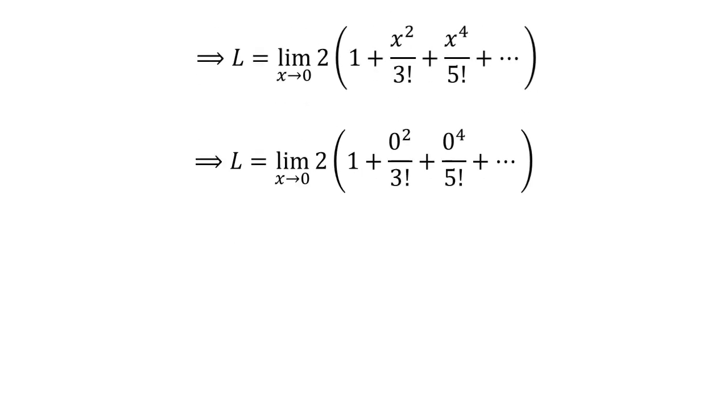As the limit is now a polynomial which is continuous at every point of real numbers, let us plug 0 for x. So the limit L equals 2. That is, the limit of e^x minus e^(-x) upon x as x approaches 0 equals 2.